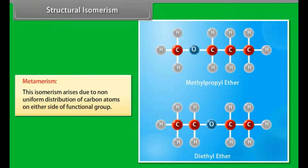Metamerism arises due to non-uniform distribution of carbon atoms on either side of a functional group. For example, methylpropyl ether and diethyl ether.